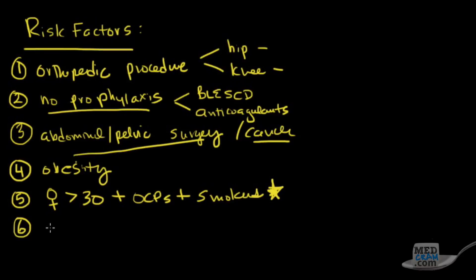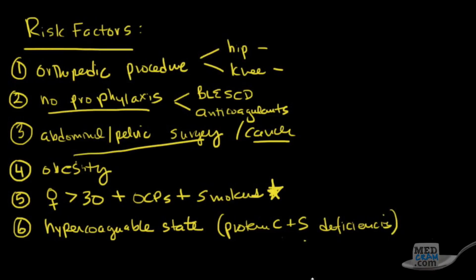Number six: hypercoagulable states. What do I mean by this? Things like protein C and S deficiencies. So you can have one or the other. That's a possible risk factor.